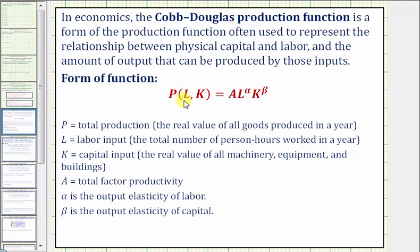This is the form of the Cobb-Douglas production function, where P is the total production, L is the labor input, K is the capital input, A is the total factor of productivity, and alpha and beta — the exponents — are the output elasticity of labor and the output elasticity of capital.